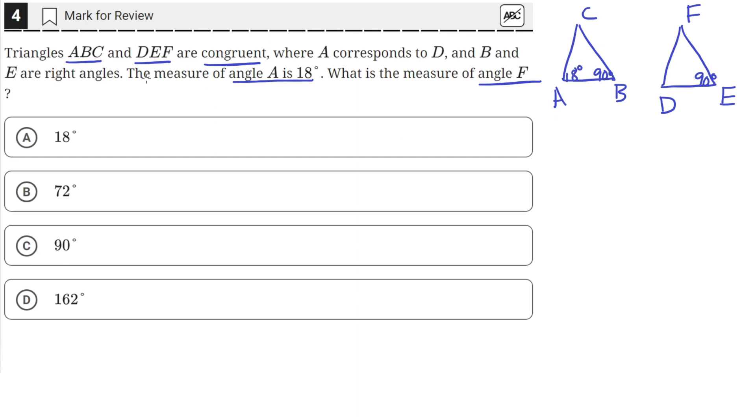Since we know that these two triangles are congruent, that means all the sides and all the angles are the same. So if angle A is 18 degrees, and angle A corresponds to angle D, then D is also 18 degrees.